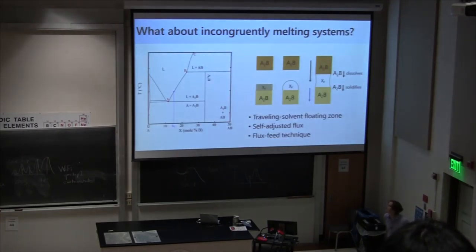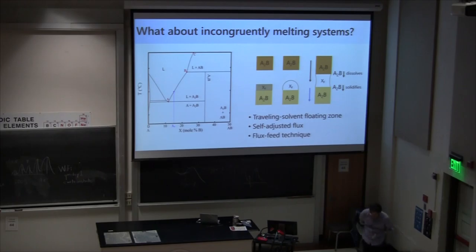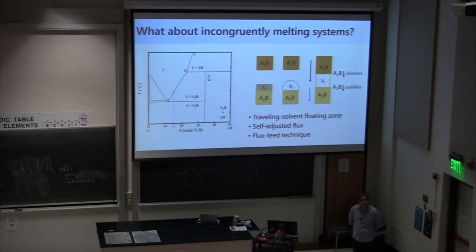Question from audience: if a sample is incongruently melting and near the peritectic temperature with many competing phases, what parameters do we need to take care of? Answer: If there are many competing phases, having a very sharp thermal gradient is going to help stabilize the one you want. A canonical example is bismuth iron oxide — BiFeO3 is very hard to stabilize as a phase-pure crystal with lamp-based floating zone. However, if you switch to a laser-based heating where you have a very sharp thermal gradient, then you can nucleate very pure single crystals. The thermal gradient is probably the dominant parameter in that case, along with slow translation.